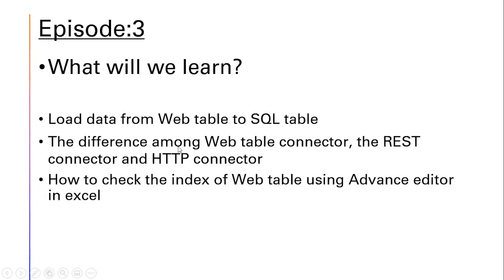In order to do that, we have to make use of the linked service present in ADF or Synapse. When we create a linked service, we can see there are 3 kinds of connectors that provide us the facility to supply the URL of a web page and fetch data from that URL. The 3 kinds of connectors are: web table connector, REST connector, and HTTP connector. We will be seeing what is the difference among these 3 connectors and when to use which kind.